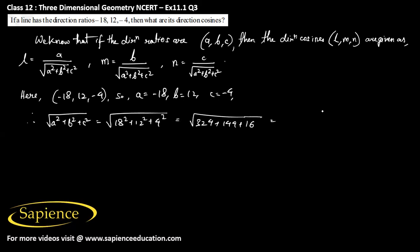Adding them: 144 + 16 + 324 = 484. So square root of 484 equals 22.